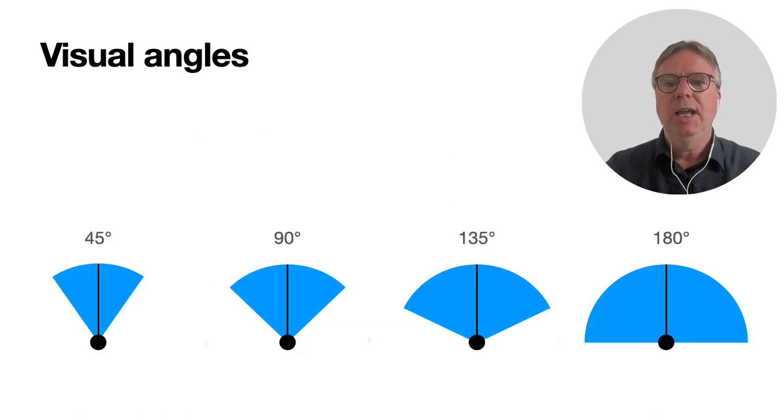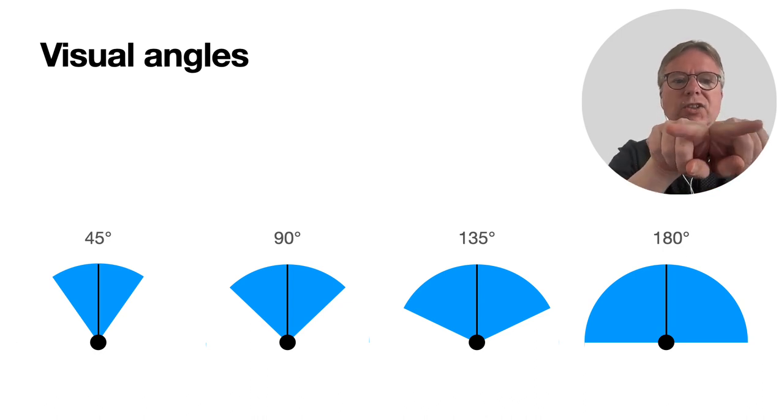Visual angles I will define as follows. The black line is straight ahead, and then the big dots is the eye or the camera. Then the visual angle extends symmetrically left to right, and the total is 90 degrees in this case - 45 degrees left, 45 degrees on the right.